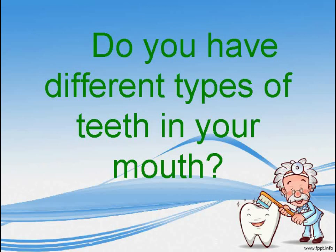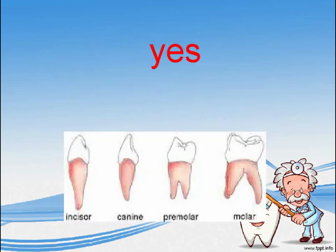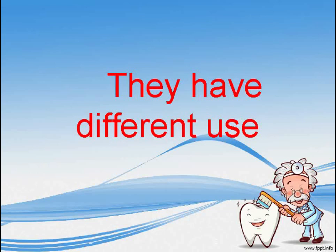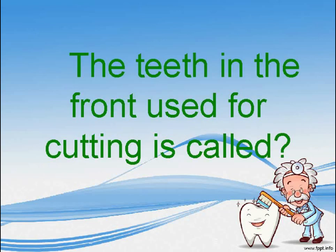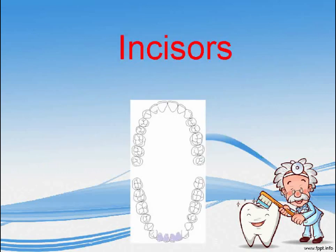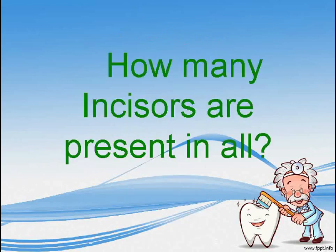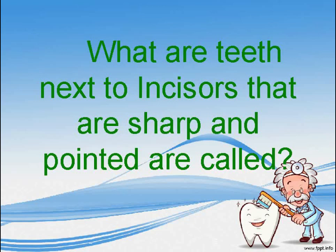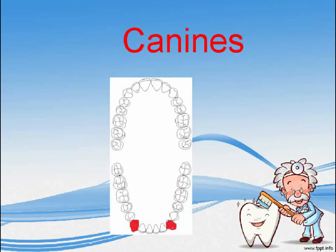Do you have different types of teeth in your mouth? Yes. Why are the teeth of different shapes? They have different uses. The teeth in the front used for cutting are called? Incisors. What are the teeth next to the incisors that are sharp and pointed called? Canines.